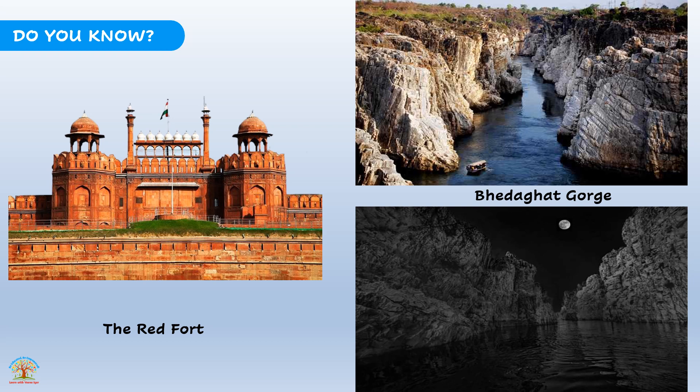The Taj Mahal in Agra is built in marble, which is a metamorphic rock that has undergone some chemical composition changes. This marble was brought from the mines in Makrana in Rajasthan. When you go for a boat ride in the river Narmada through Bedaghat Gorge in Madhya Pradesh, the river has cut its gorge through marble rocks as shown in the image here. These rocks on both sides are marble rocks - metamorphic rocks. During sunset, sunrise, or the full moon nights, you can see an enchanting scene - it's so elegant to have a boat ride there.